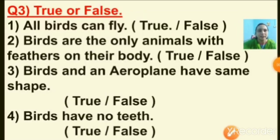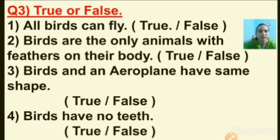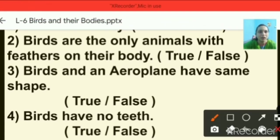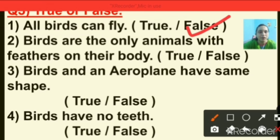Question number three: true or false. First one — all birds can fly. Options are true or false. This statement is false, so I am putting a tick on the false option.